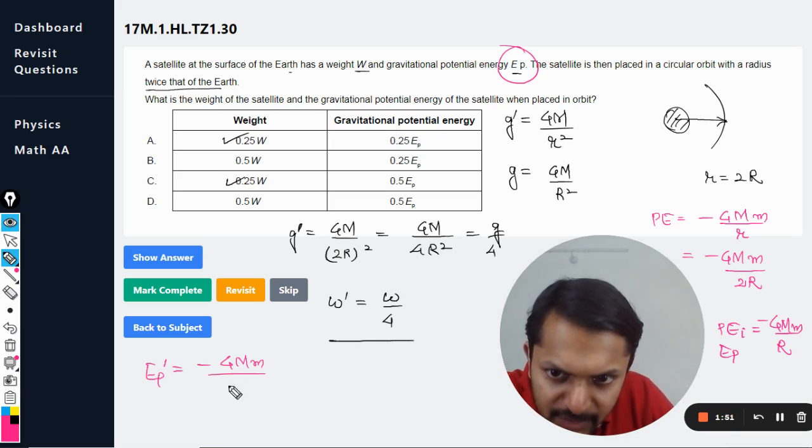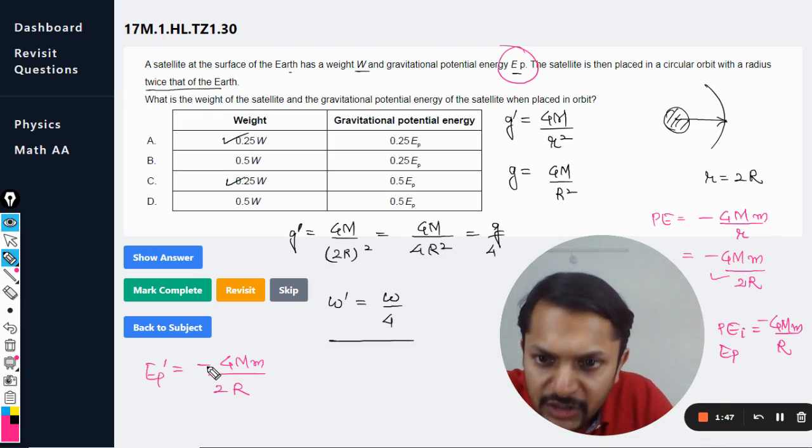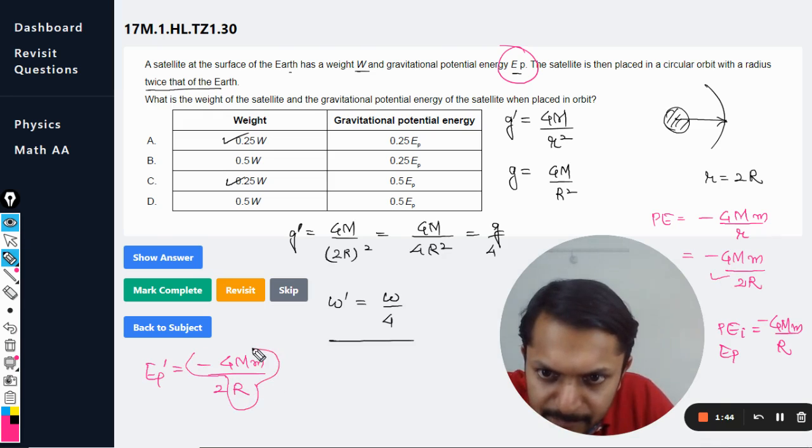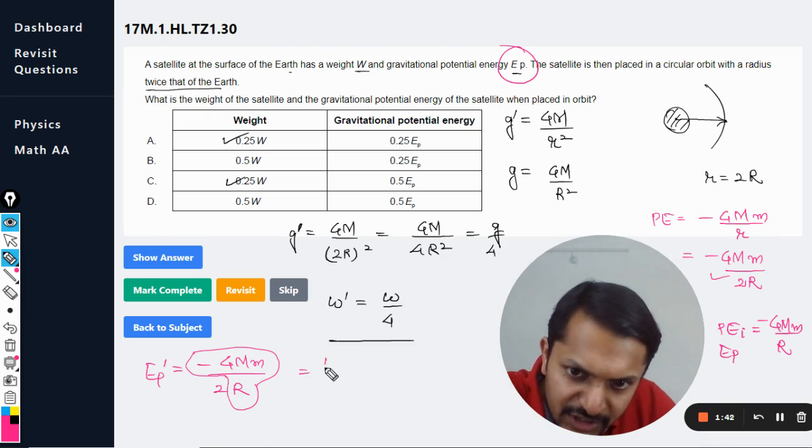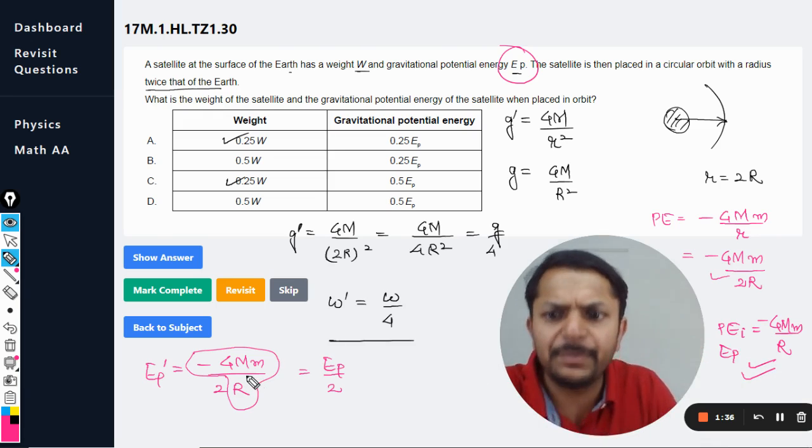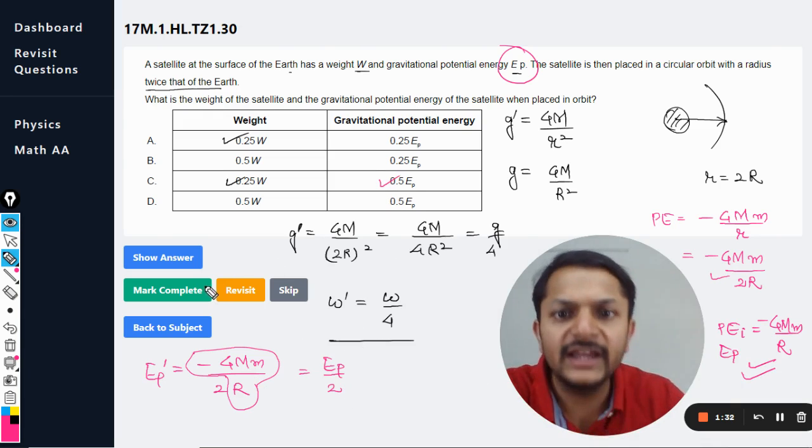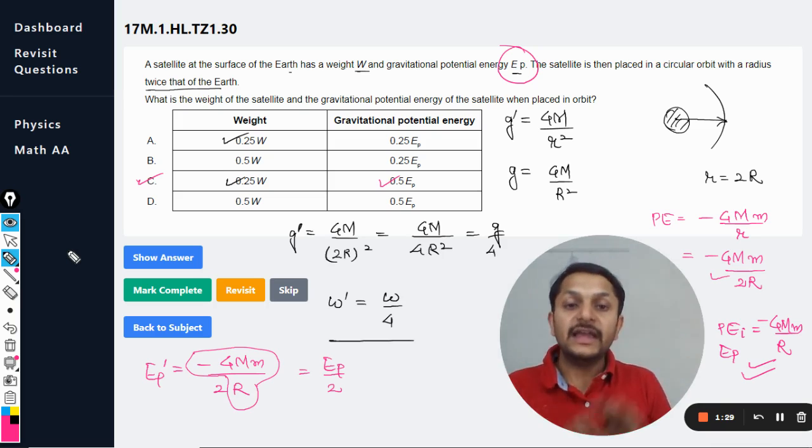I've just rewritten this formula there and now I'm clubbing this much into Ep divided by 2. You can see Ep is equal to minus GMm by R. I just replaced it here and the answer is Ep divided by 2, so it is 0.5.